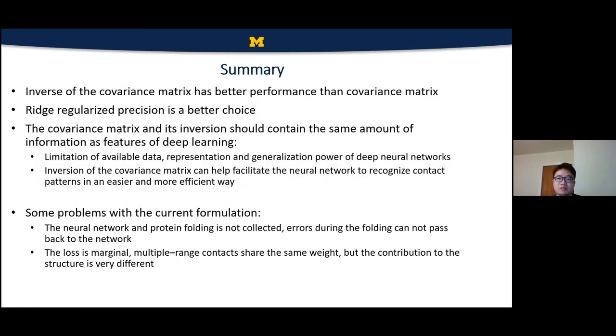And here we have a brief summary of ResPRE. The first one is that the inverse of covariance matrix in this problem should have a better performance than the covariance matrix itself. And the second one is that the ridge regularization should be a better choice. So actually, the covariance matrix and its inversion should contain the same amount of information when they are used as features of deep learning. But actually, in practice, there are many limitations of the current system. For example, the limitations of available training data, the representation power of deep neural networks. So the precision matrix compared to covariance matrix should help the neural network to recognize those contact patterns in an easier and more efficient way.